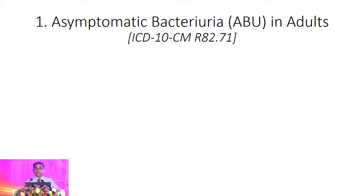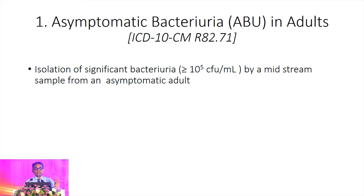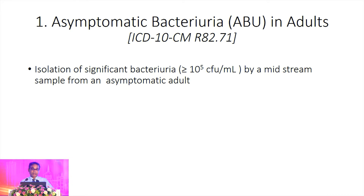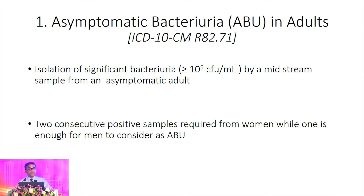Asymptomatic bacteriuria in adults, especially females — although this is not a difficult-to-treat infection, it has been involved in a lot of irrational prescribing of antimicrobials. I have included this because it is directly contributory to antibiotic stewardship programs. The definition of asymptomatic bacteriuria is the isolation of a significant number of bacteria — more than 10 to the power of 5 colony-forming units per mL — by a midstream sample from an asymptomatic adult. We need at least two urine cultures for females and one culture from an adult male to call it asymptomatic bacteriuria.